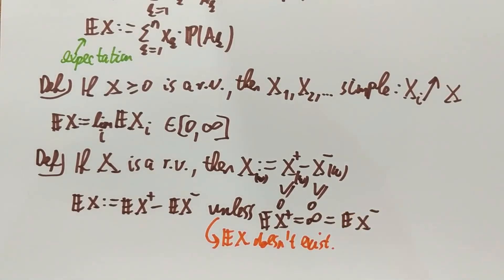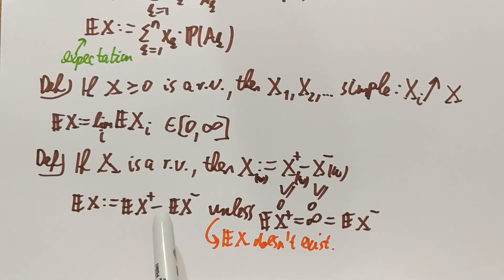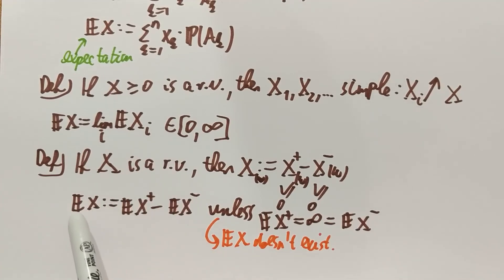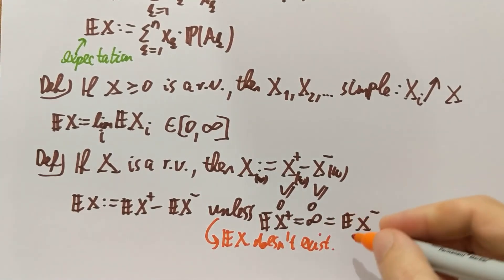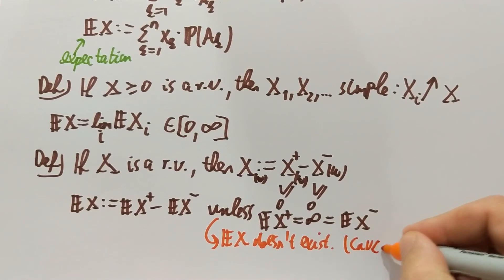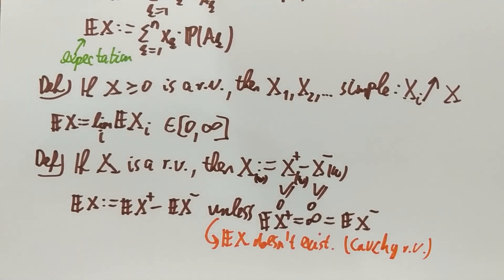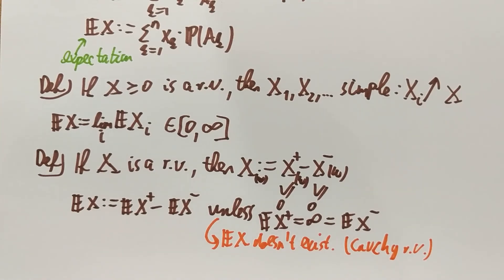There are a few cases: if both positive and negative parts have finite means, the difference is finite and everything is fine. If the positive part has infinite mean and the negative part is finite, then E[x] is infinite — that's okay. If the positive part is finite and the negative part is infinite, then E[x] is minus infinity — also fine. The only issue is when both parts have infinite means; in that case we don't have an expectation. An example is the Cauchy random variable: the Cauchy random variable has both positive and negative parts with infinite expectation, and therefore it doesn't have a mean or expected value.